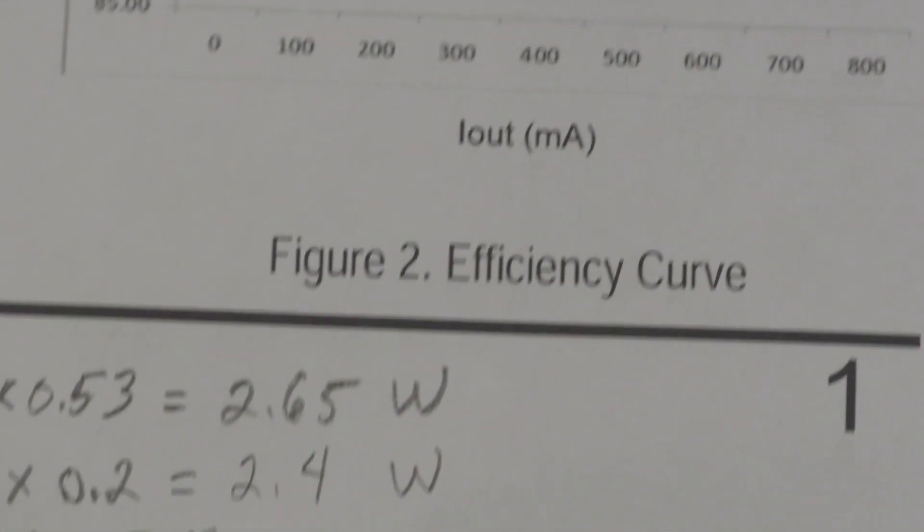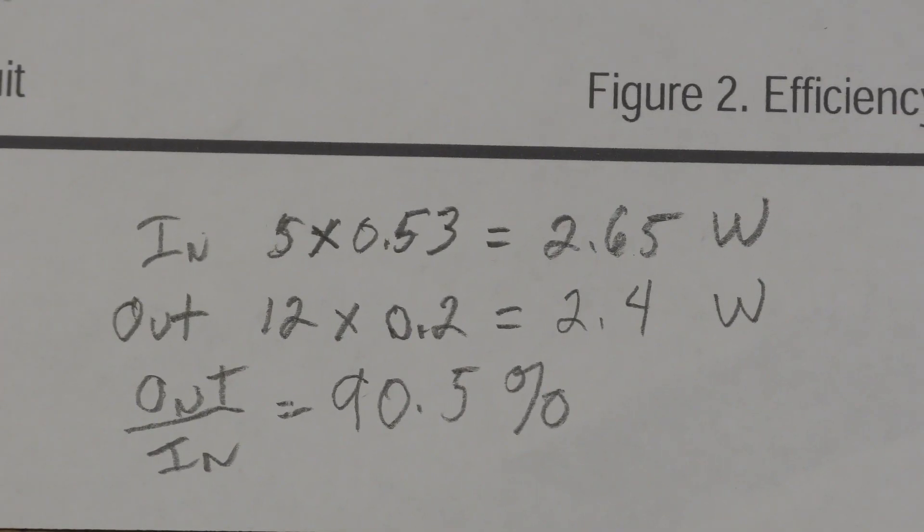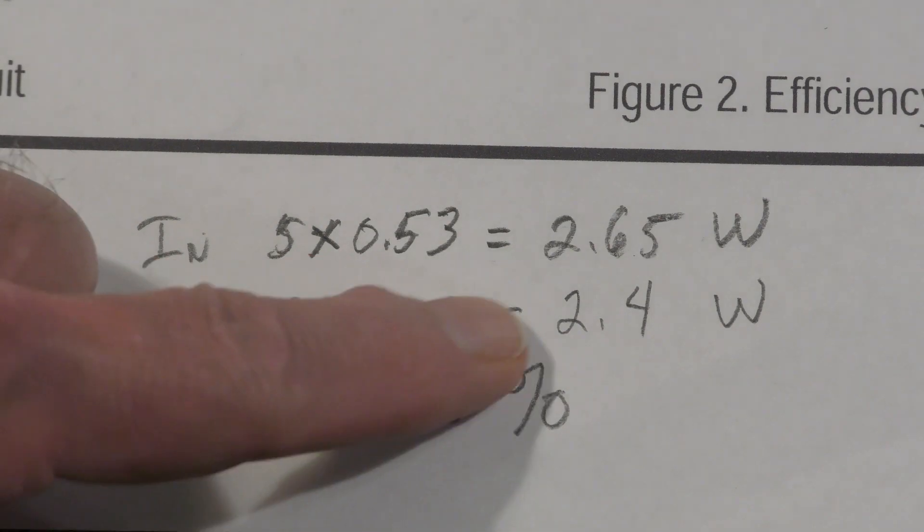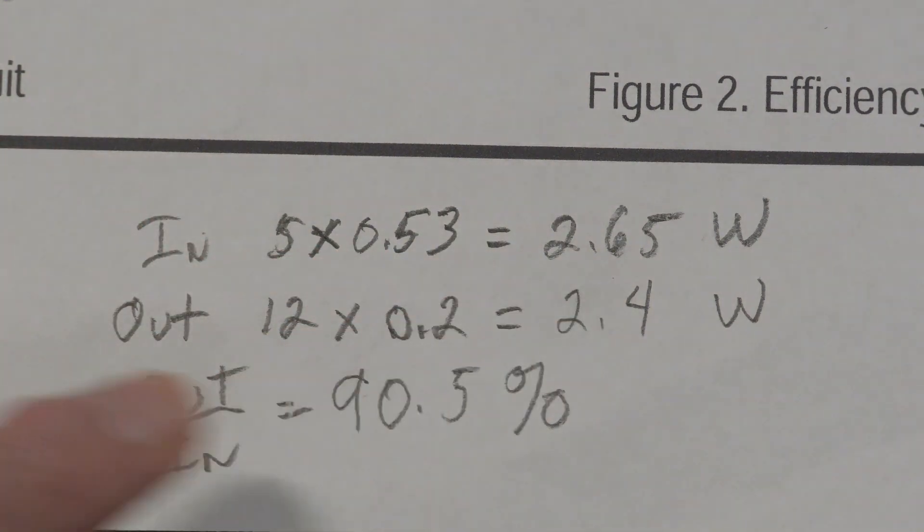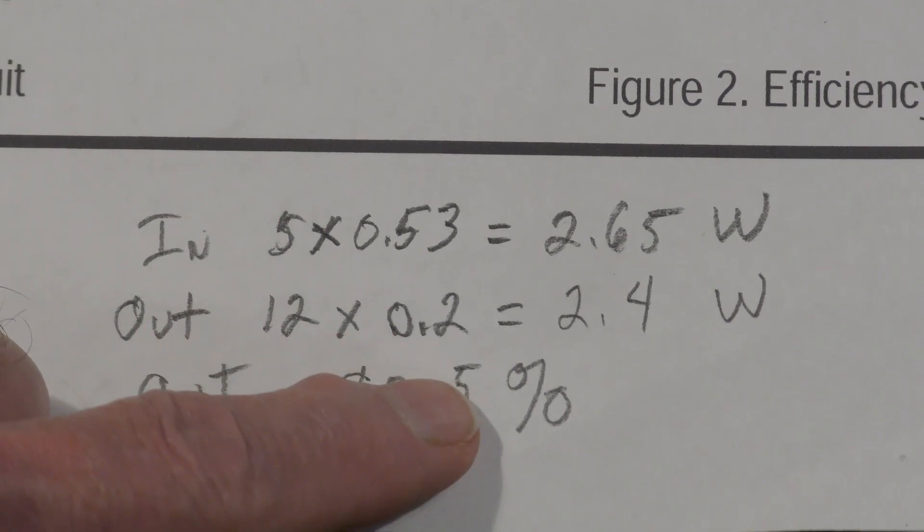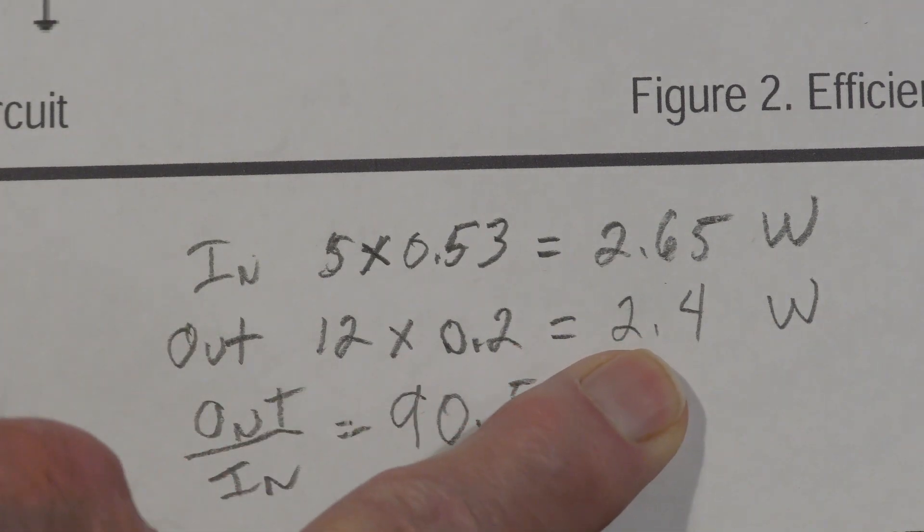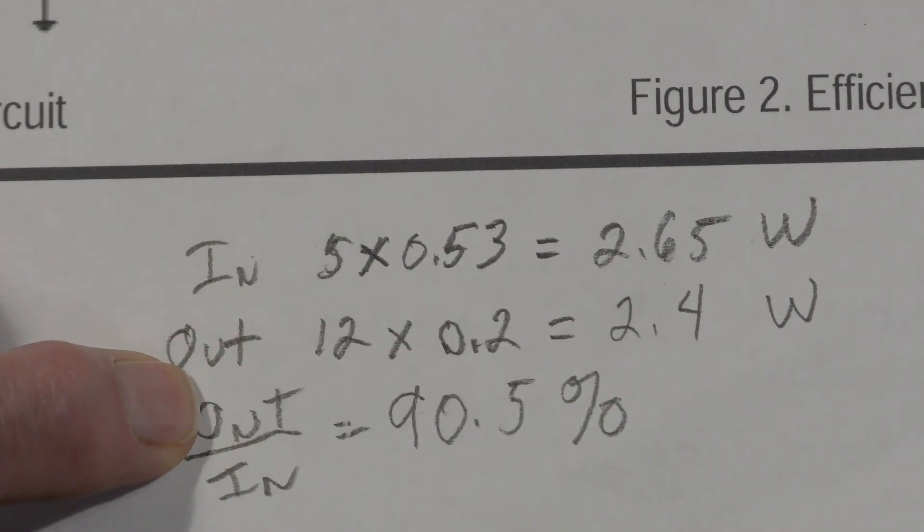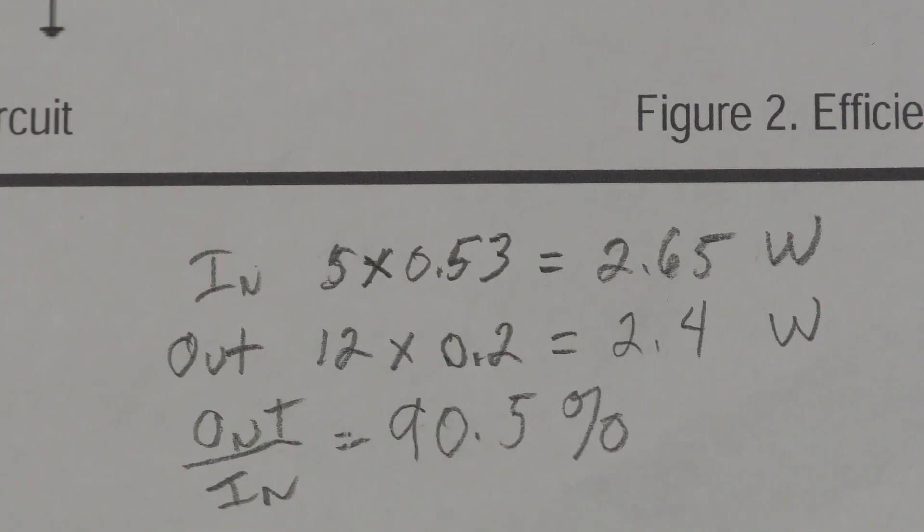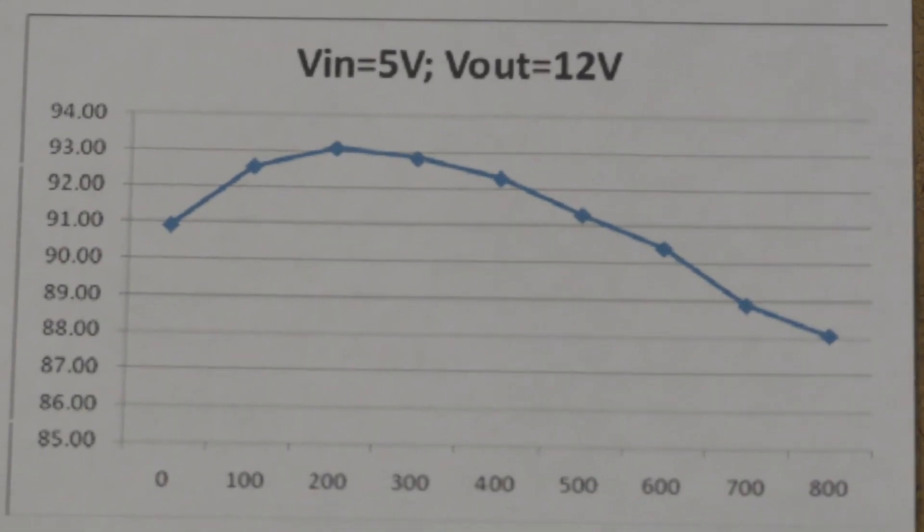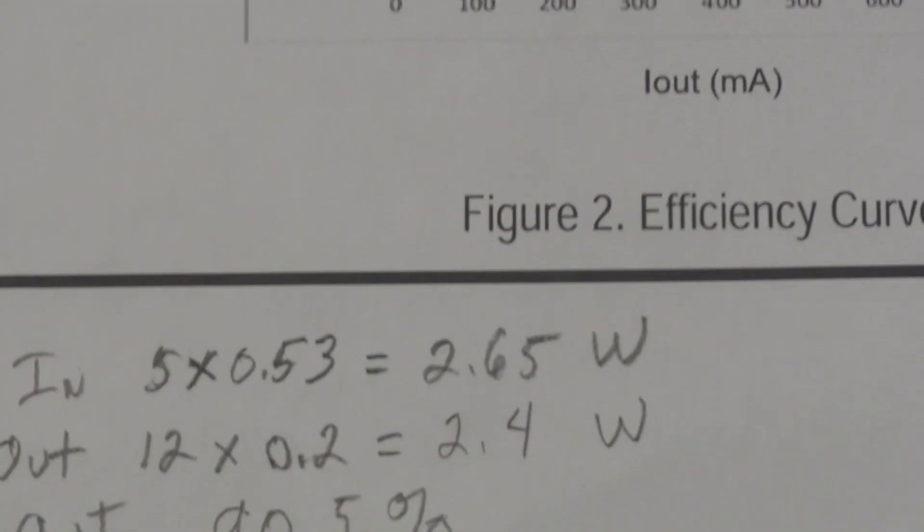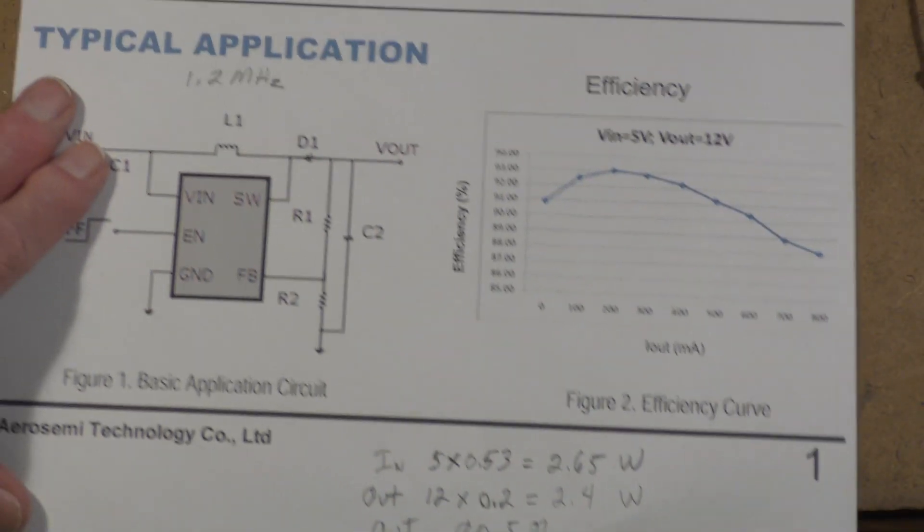Now here are the values that I actually got: 5 volts in at 0.53 amps, or a total of 2.65 watts in, and an output power of 12 volts times 0.2, or 200 milliamps, or 2.4 watts out. So if you divide the output power by the input power, you'll find that it's about 90.5 percent. So that's not quite as good as the chart you see above, but it's fairly close and it's fairly typical for these kinds of DC to DC converters.